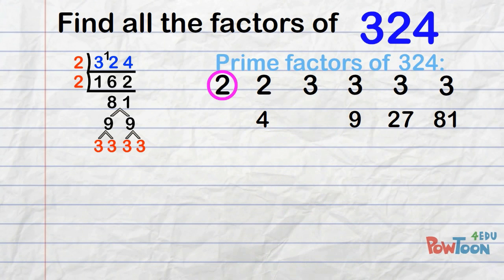Start with 2. 2 times 3 is 6, 2 times 9 is 18, 2 times 27 is 54, 2 times 81 is 162.